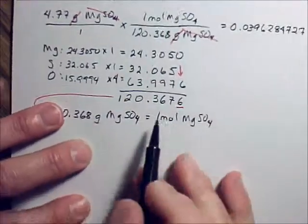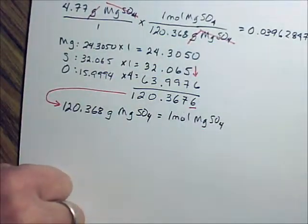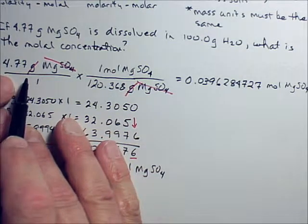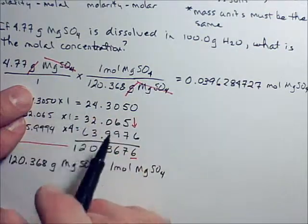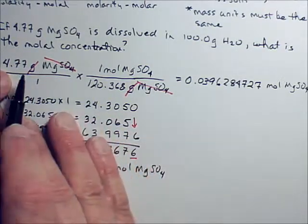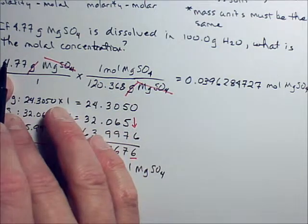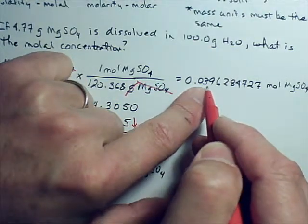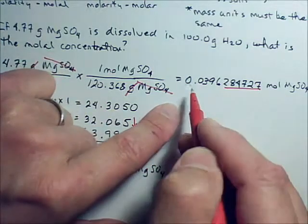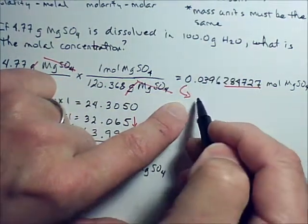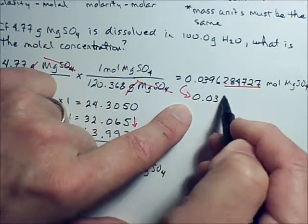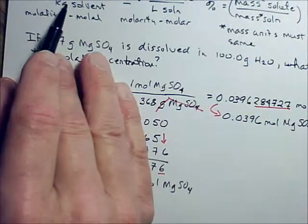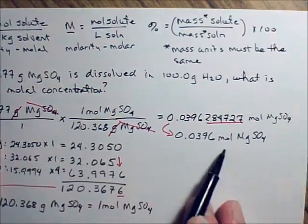We need to round this number off. In multiplication and division, you round off your answer to match the measured number with the least digits. The 4.77 has three digits and 120.368 has six digits — these two numbers are what we look at; the counting numbers don't count. So we write our final answer with three significant digits. The leading zeros are insignificant, so our first significant digit is the three. We get 0.0396 moles of magnesium sulfate — that's the moles of solute we need.